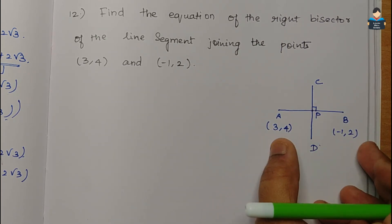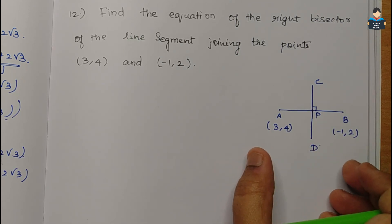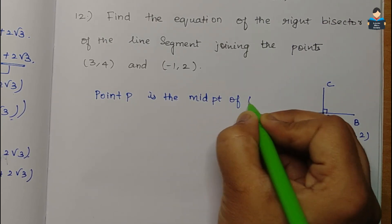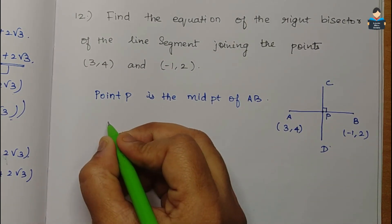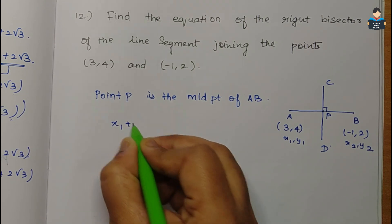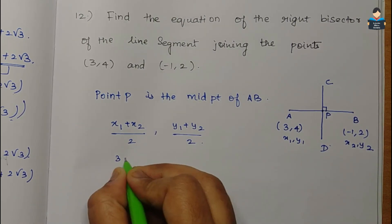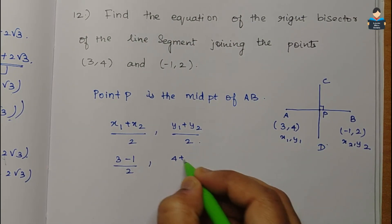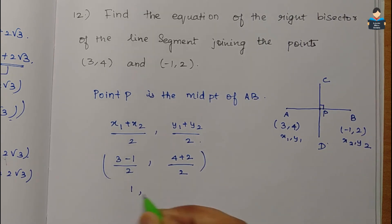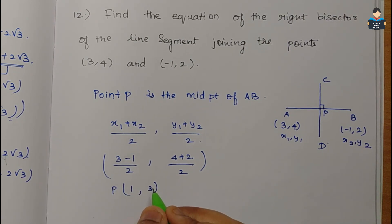Using the midpoint formula, x1 plus x2 by 2 and y1 plus y2 by 2, we get: x-coordinate = (3 + (-1)) / 2 = 2/2 = 1, and y-coordinate = (4 + 2) / 2 = 6/2 = 3. So the midpoint P has coordinates (1, 3).